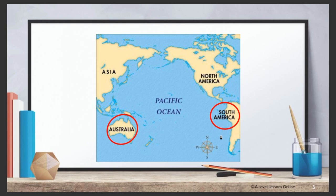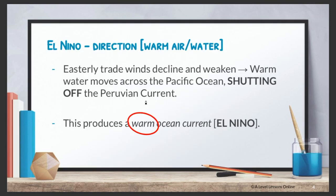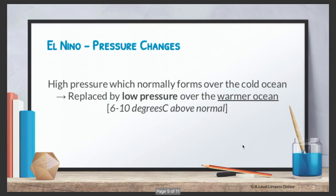In the case of El Niño, we focus on Australia and South America. Easterly trade winds normally blow from east to west, but during El Niño, those easterly trade winds start to shut down — they decline and weaken. As a result, the whole process reverses: the winds now blow from the west to the east, from Australia towards Chile or Peru in South America. The warm water then moves across the Pacific Ocean, shutting down the Peruvian Current, which is a deep, cold, nutrient-rich ocean current. This warm current that replaces it is called El Niño.